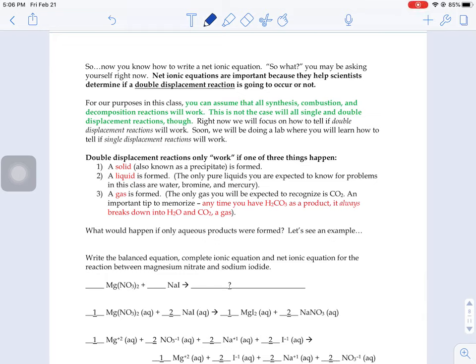For the last few days we've been learning how to write a net ionic equation, but you don't really know why we're doing them yet. What's the point other than to get a few extra points on your chemistry tests, right? Net ionic equations do have a purpose for scientists. Net ionic equations are important to us because they tell us whether or not a double displacement reaction is going to occur or not.